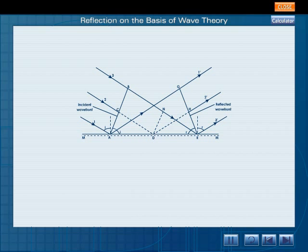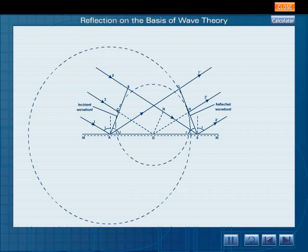With points A and D as centres, circles of radii BR and HR respectively are drawn. These circles represent the secondary wavelets. Now the tangent to all secondary wavelets gives the reflected wave front. RG represents the reflected wave front.